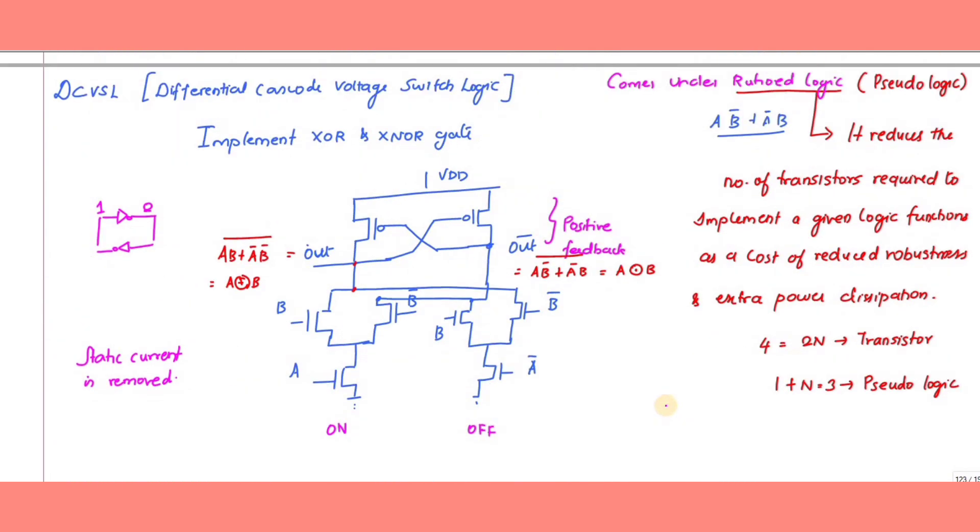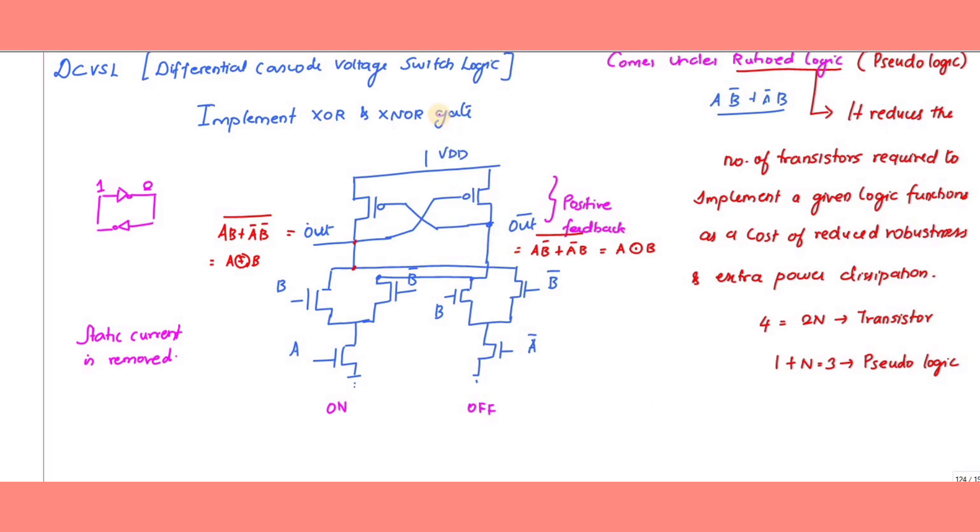Now let's implement XOR and XNOR gates using DCVSL. For the XOR gate, connect A and B in series, giving A·B. In parallel with this, connect A-bar and B-bar in series, giving A-bar·B-bar. The output is (A·B + A-bar·B-bar)-bar, which equals A XOR B.